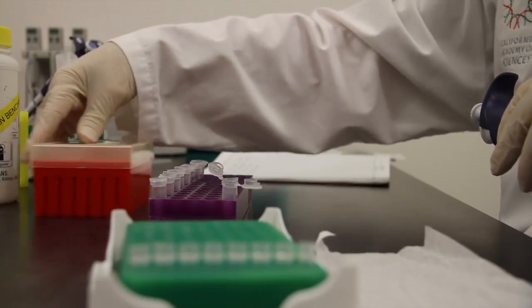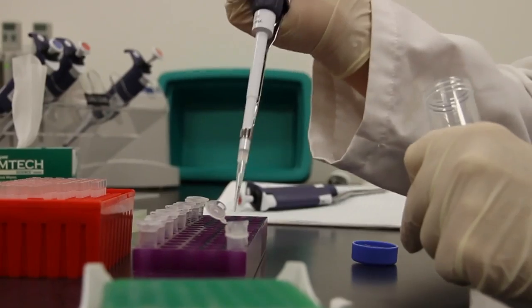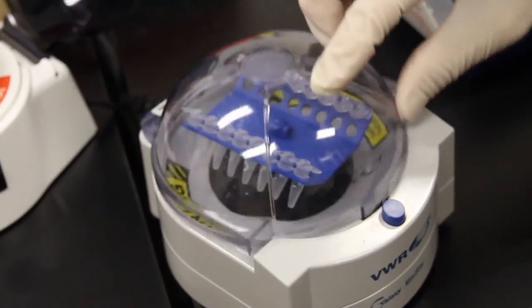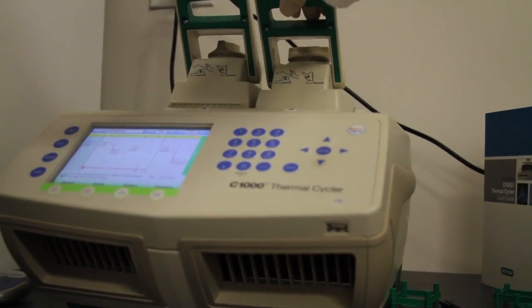So the next step is to set up for the polymerase chain reaction, which is the PCR reaction. This will target a specific gene and make millions and millions of copies of it. So the next step is to add all the reagents and chemicals necessary to do this. And essentially we recreate the environment in your cells that are going on right now that duplicates or replicates your DNA.